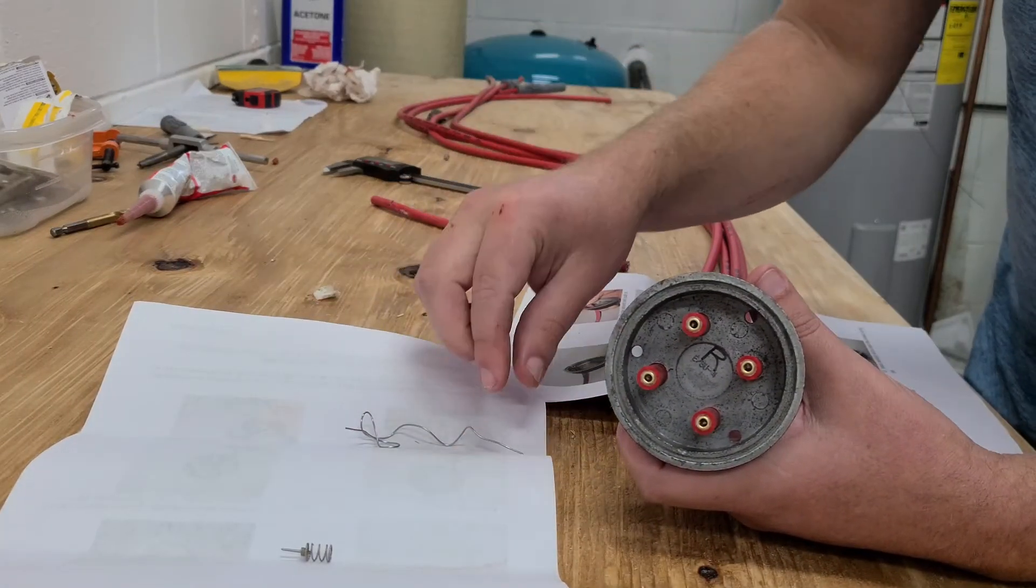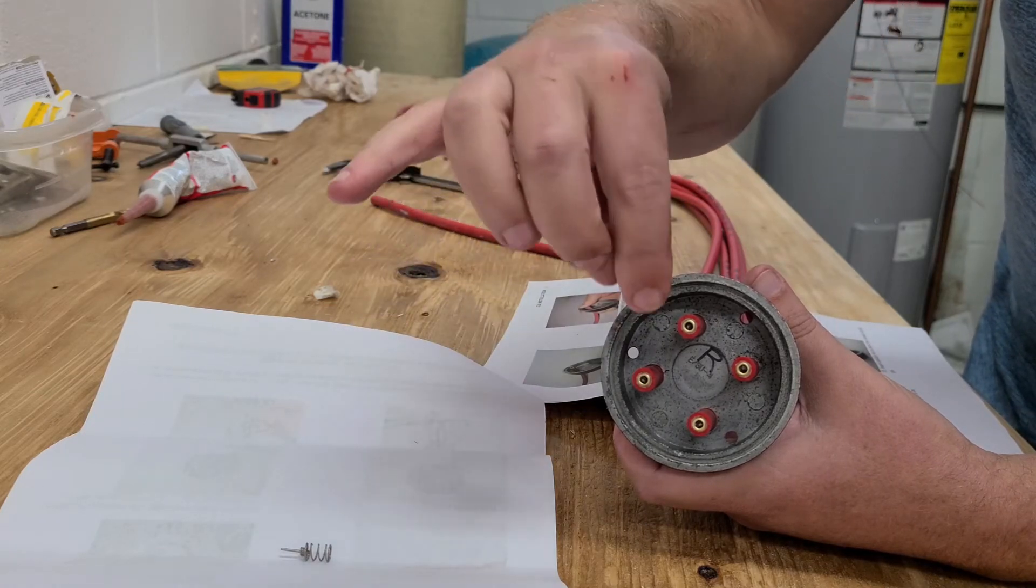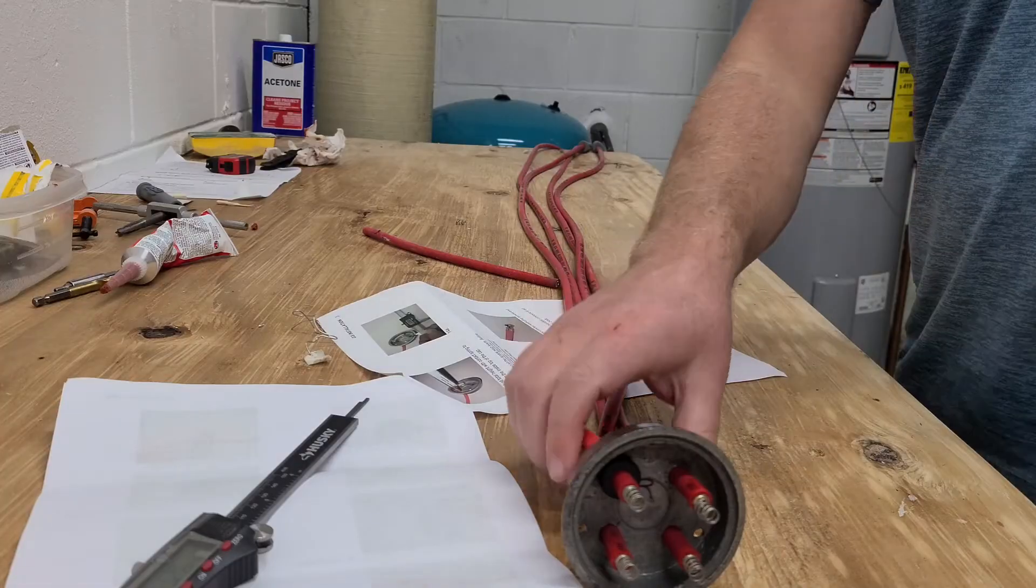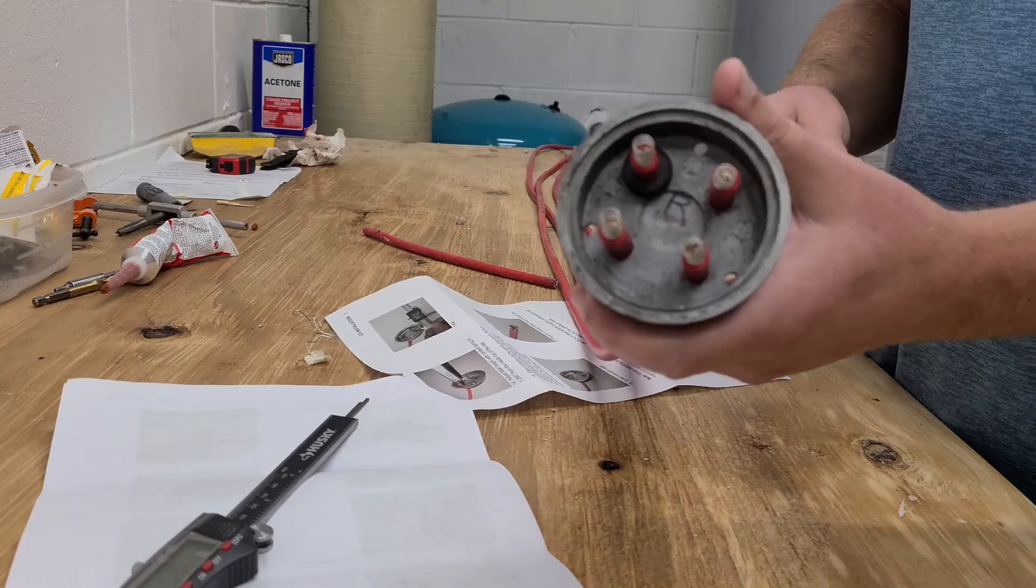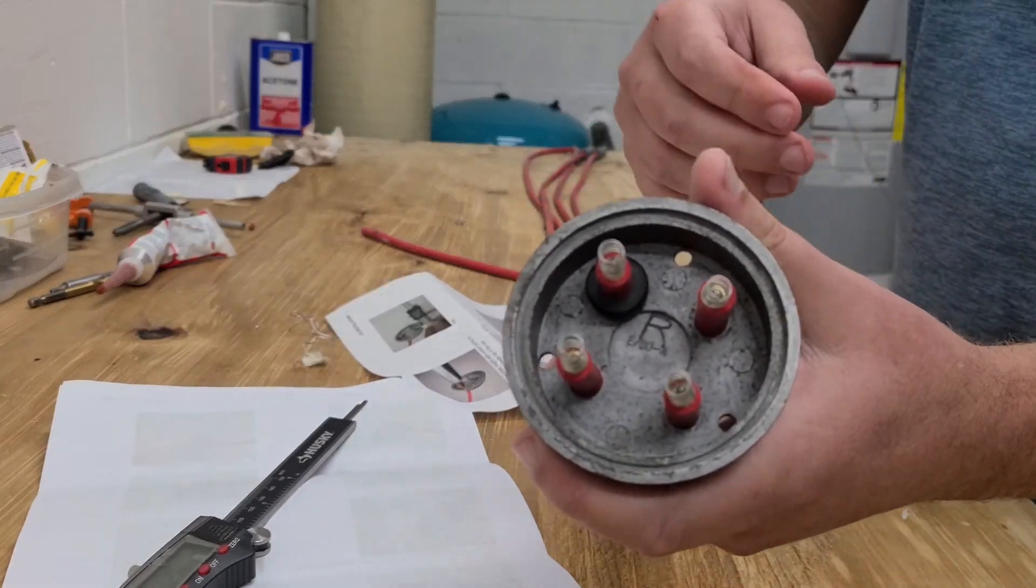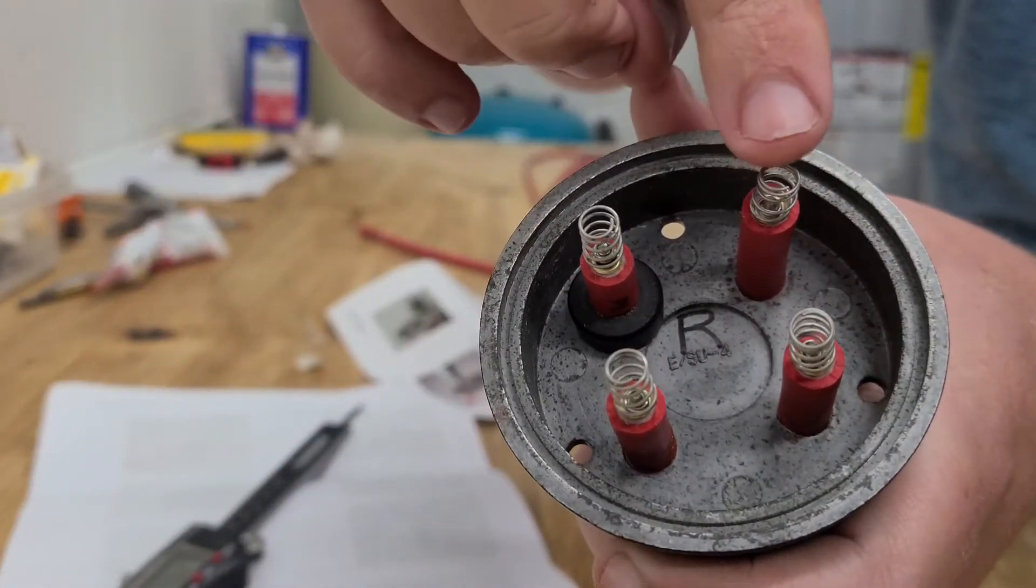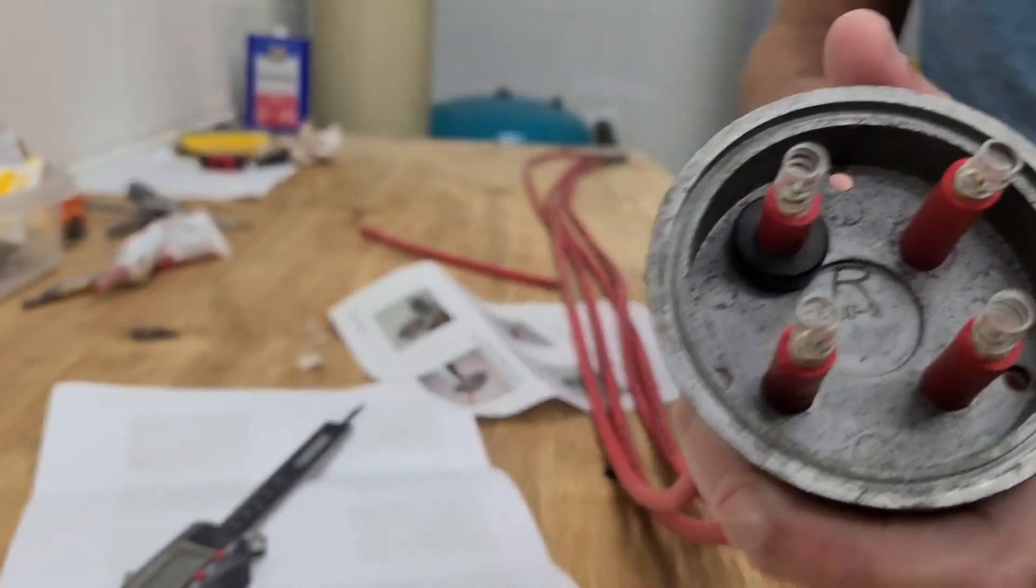All right, so we got all our contact springs or coils in. You can see they're all in. The final step - well, second final step for this minus the spark plug boots - is measuring.